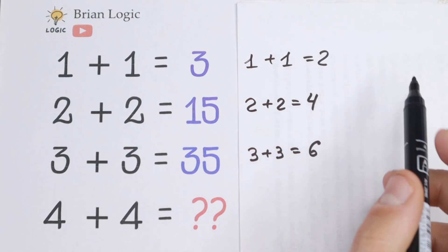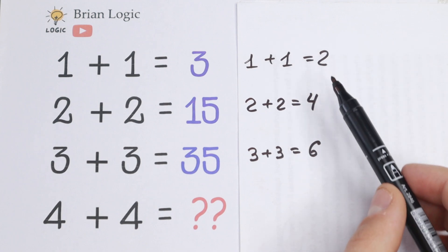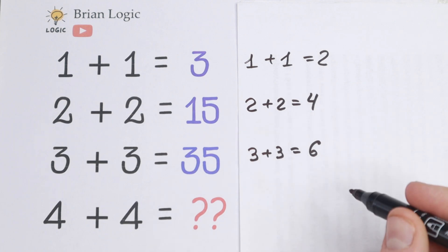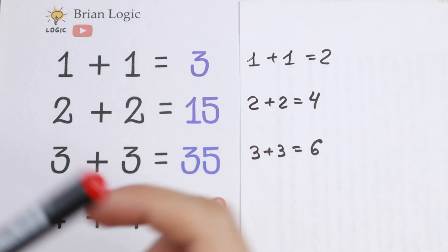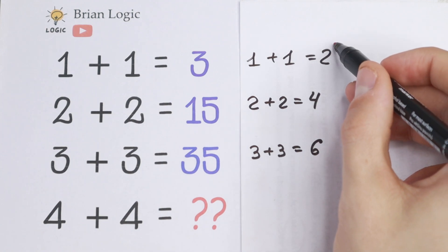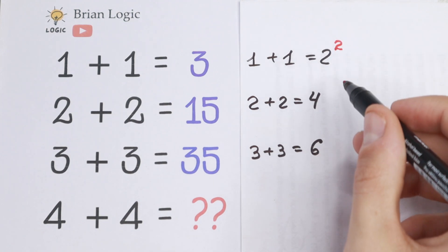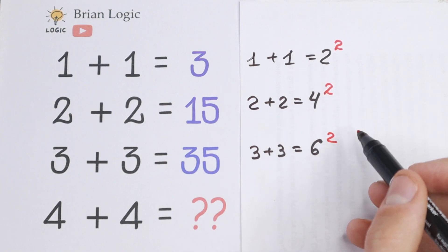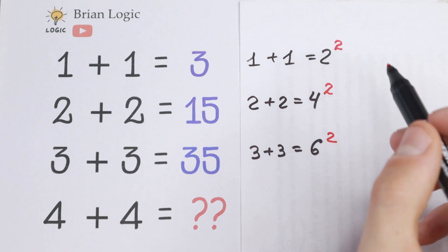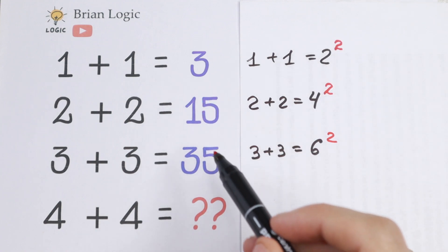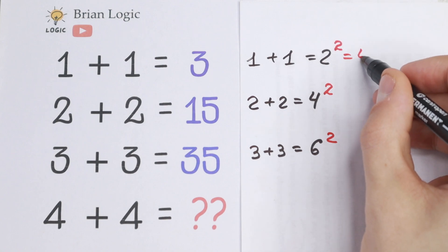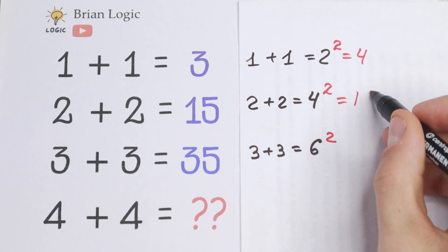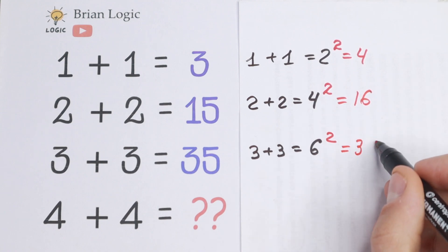Take a look — I see a really interesting pattern between the numbers on the right hand side and the numbers on the left hand side. If we raise two to the second power, and if we raise four to the second power, and if we raise six to the second power, we will get really good numbers close to three, fifteen, and thirty-five. Because two squared equals four, four squared equals sixteen, and six squared equals thirty-six.